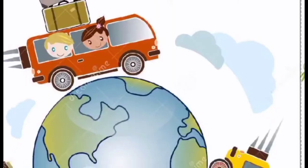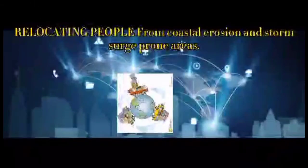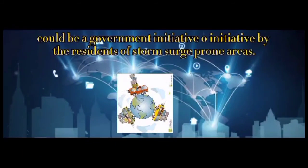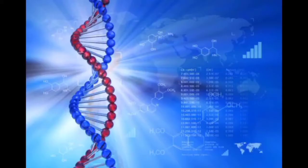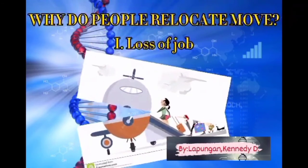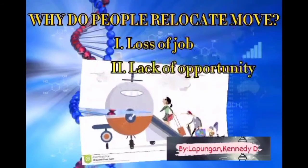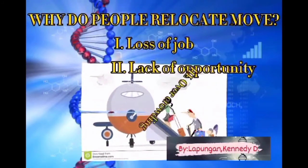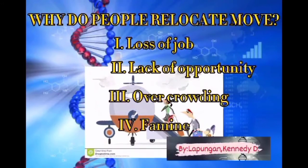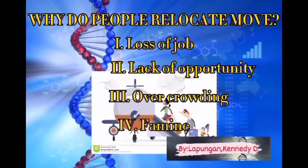Coastal wetlands provide many services; they are habitat for fish and also serve as a nursery. Relocating people from coastal erosion and storm surge prone areas could be a government initiative or initiative by the residents. Why do people relocate? First, loss of job; second, lack of opportunity; third, overcrowding; fourth, famine; and last, war.